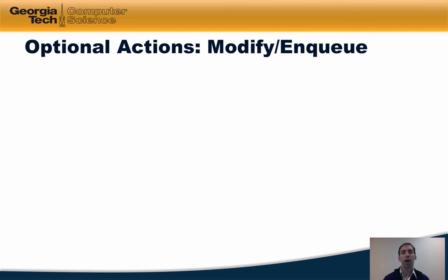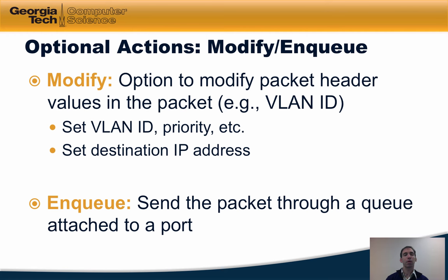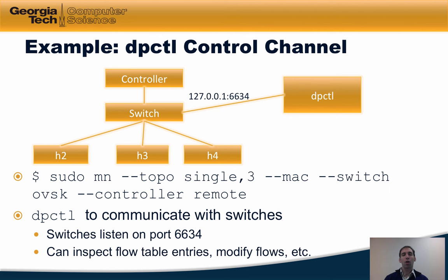In addition, the OpenFlow 1.0 specification describes several optional actions. One is the modify action, whereby the switch might modify various packet header values such as the VLAN ID or the destination IP address. Modifying the destination IP address could be useful for performing higher-level operations such as wide-area network load balancing. Another optional action is to send the packet through a queue attached to an output port, which could be used to apply quality of service or traffic shaping.